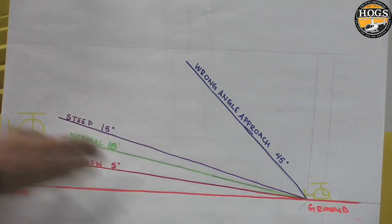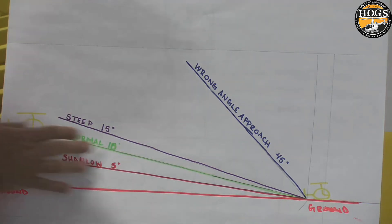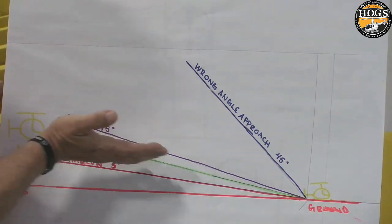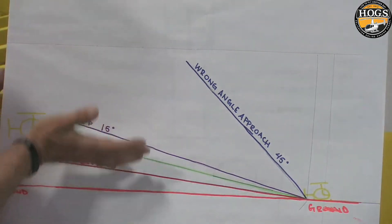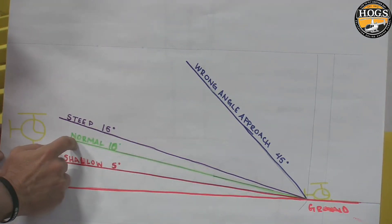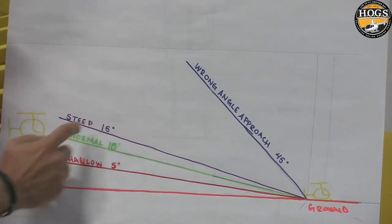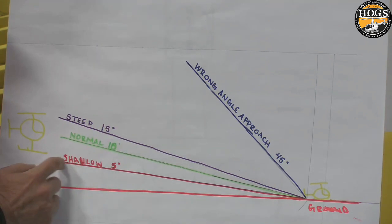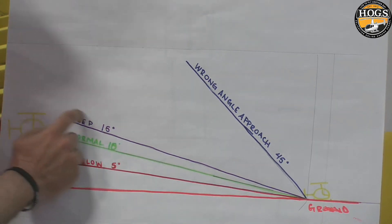Know those numbers, and again, you can visualize this — what is 5, what is 10, what is 15? Learn the normal first, then you can build on what it looks like for shallow and what it looks like for steep. This is a phenomenal question that people ask all the time. If you don't understand that approach angle, it causes you a lot of trouble, and a lot of people struggle with this.